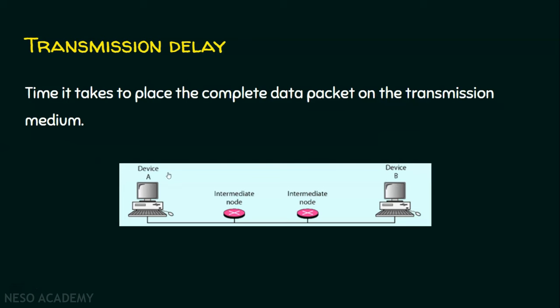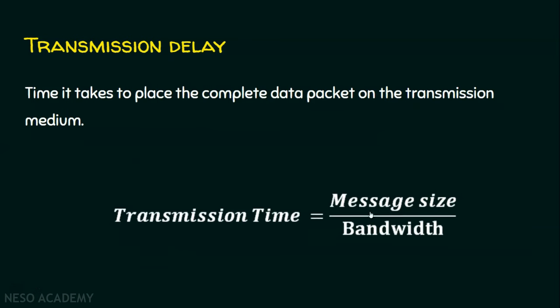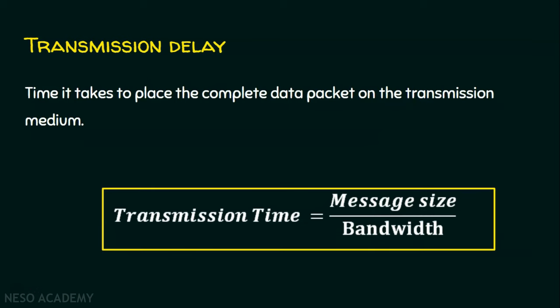Let's see an example. Suppose if we have two devices — device A and device B. How much time it takes for device A to place the complete message on this outgoing link, that is the transmission medium, is called as the transmission delay. This transmission delay is based on two parameters: number one, the bandwidth, and number two, the size of the message. The formula is: transmission delay or transmission time equals message size divided by bandwidth. Please make a note of this formula, as we will be solving some problems using it in the coming lectures.